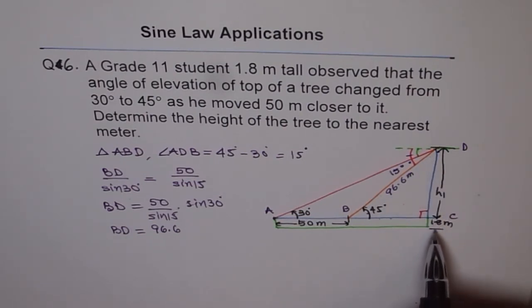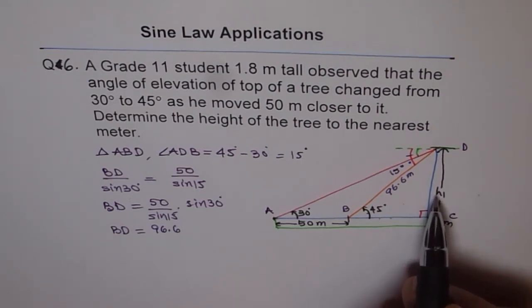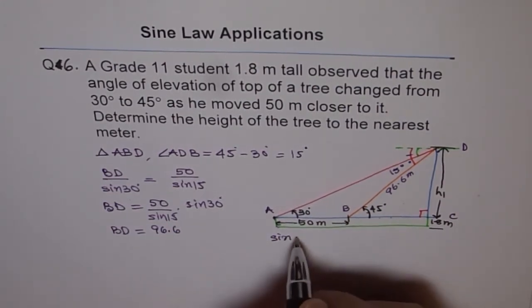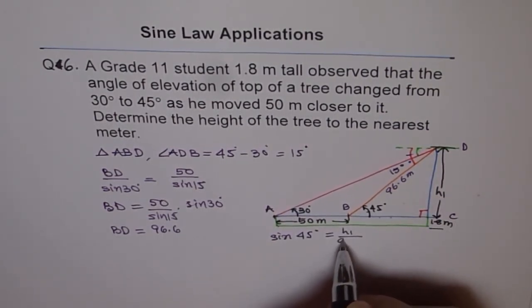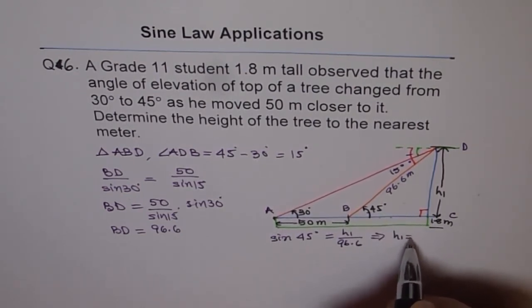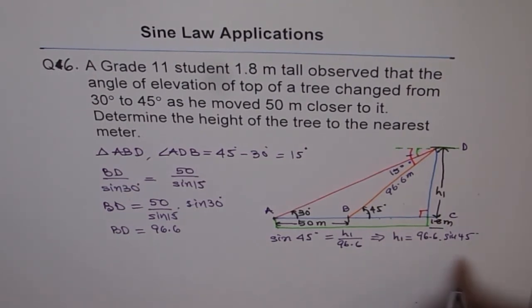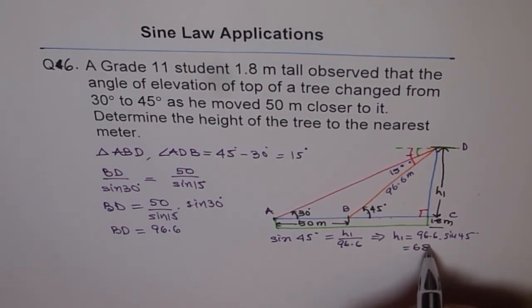And remember, after finding the height, we have to add 1.8. So it is 45 degrees, opposite side is h1. So we get sine of 45 degrees. So we can do it here. So we get sine of 45 degrees is equal to h1 over 96.6. That implies that h1 is equal to 96.6 times sine 45, which is 1 over square root 2. Anyway, we will figure out. So it is 96.6 times sine of 45, which gives me 68.3. So we get that height as 68.3.